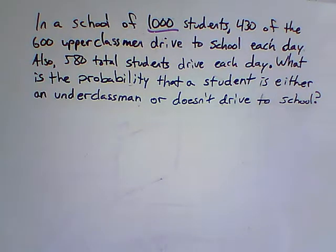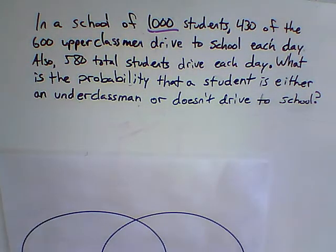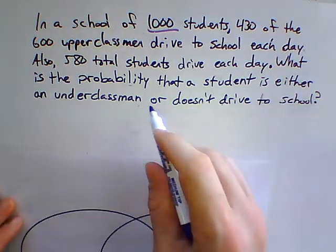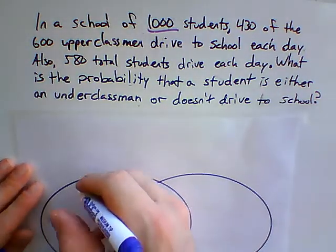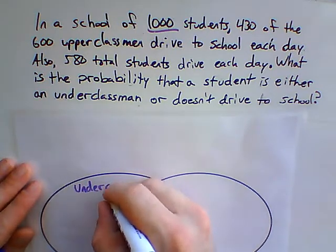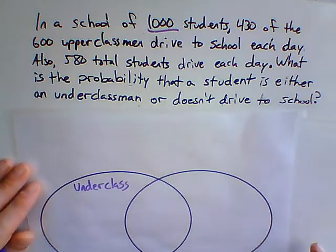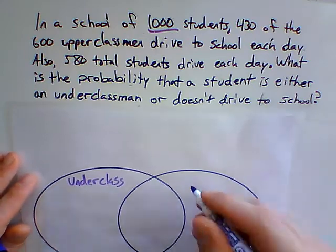Now we're going to do the third problem using Venn Diagrams. Remember, with Venn Diagrams you start off by looking for the question: What is the probability that a student is either an underclassman — so I'm going to put underclassman here — or doesn't drive to school.